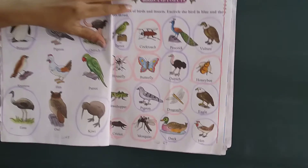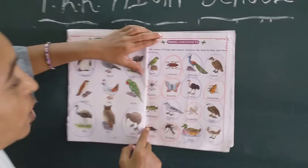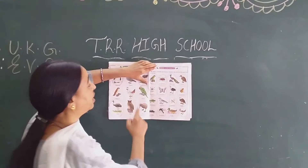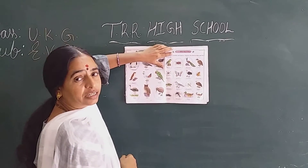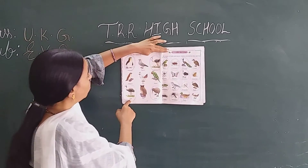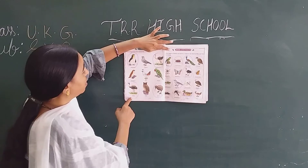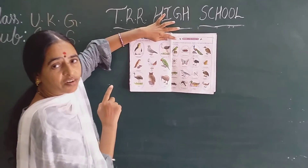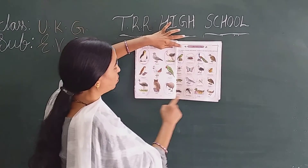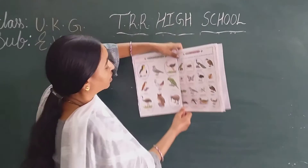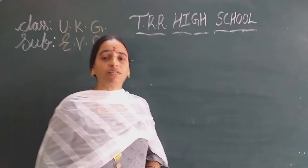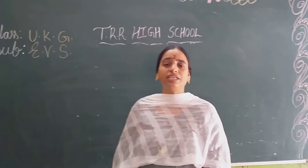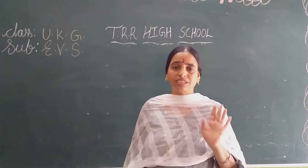All finished? Yes. Like this, you have to circle the birds with blue color and for the insects, red color. Here, you only have to circle birds that cannot fly. These two pages, you have to complete at home neatly. Okay children, this is our today's class. I will meet you in the next class. Bye children.